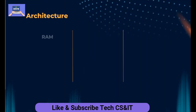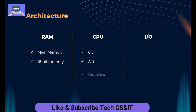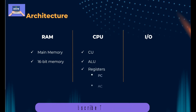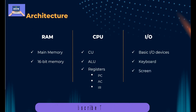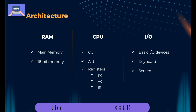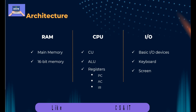Talking about the architecture, we have memory — RAM, also called main memory. The important point is that 16 bits of memory are required for a single instruction. If we have 10 instructions, 16 bits are required for each. We also have the CPU, whose components include the Control Unit (CU), the Arithmetic and Logic Unit (ALU), and some registers.